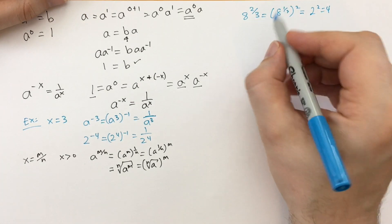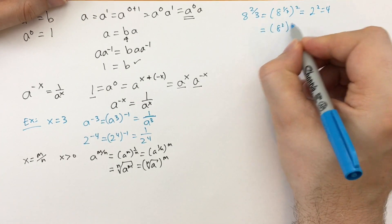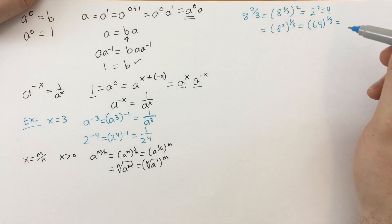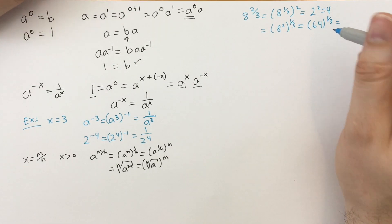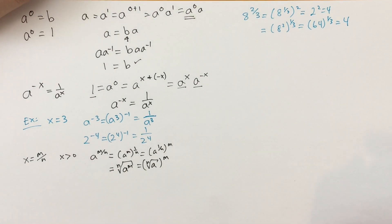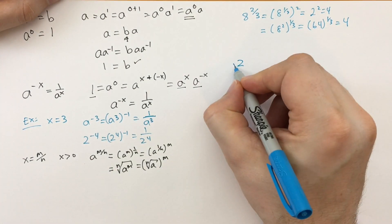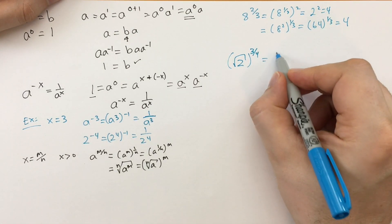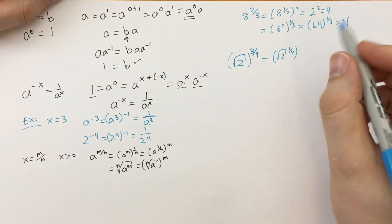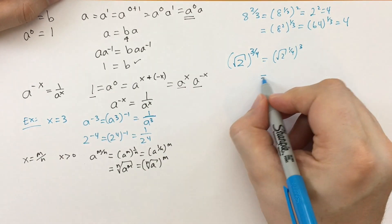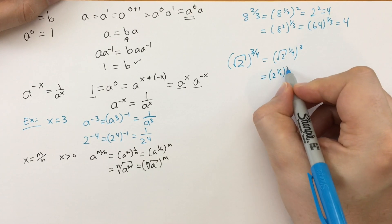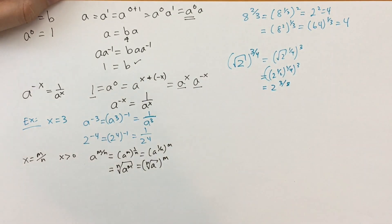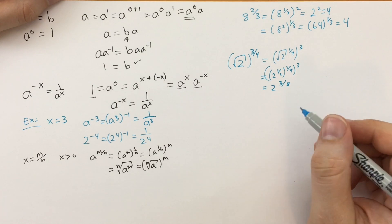We could also compute it as 8 squared to the one-third power: 8 squared is 64, and the cube root of 64 is 4, since 4×4×4=64. Another example: the square root of 2 to the three-quarters power equals the square root of 2 to the one-quarter, to the third power. That's 2 to the one-half to the one-quarter to the third, which gives 2 to the three-eighths.